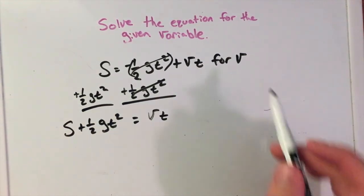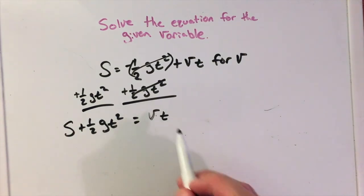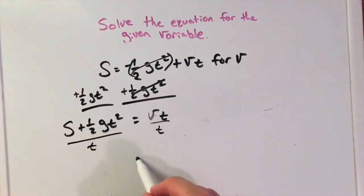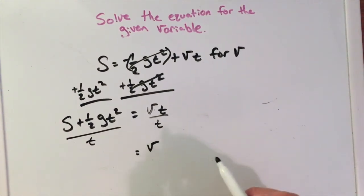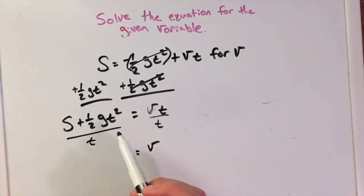Now it becomes pretty simple. We want to solve for v by itself. We have multiplication going on here, so we divide t from both sides. Now we're left with v equals this whole left side. I'm going to distribute this t to both parts, which will get rid of the squared.